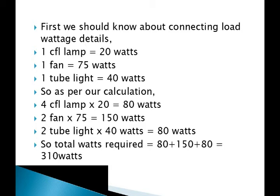First we should know our connected load wattage details. Usually one CFL lamp is 20 watts, one fan is 75 watts, and one tube light is 40 watts. As per our calculation, 4 CFL lamps at 20 watts each equals 80 watts, 2 fans equal 150 watts, and 2 tube lights equal 80 watts.